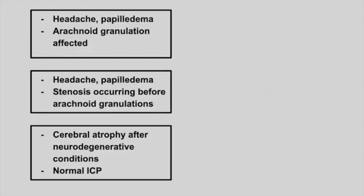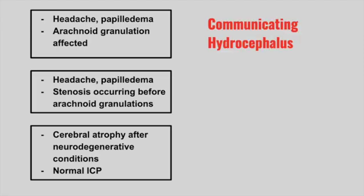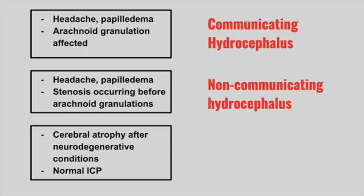Next is a patient who has a headache, papilledema, and the arachnoid granulations are affected. This is communicating hydrocephalus, also called non-obstructive. Next is a patient who has headache and papilledema, but the stenosis is occurring before the arachnoid granulations within the ventricular system. This is non-communicating or obstructive hydrocephalus.